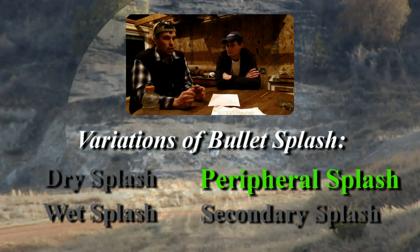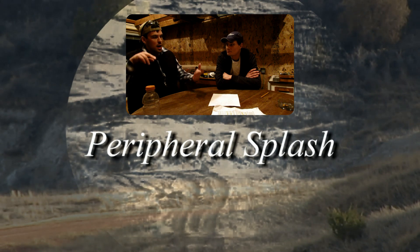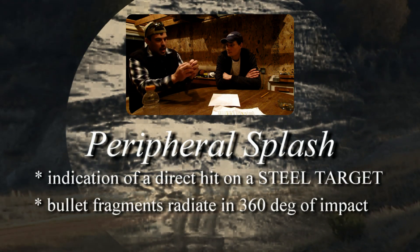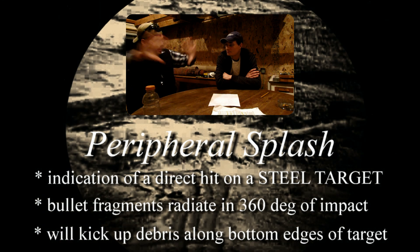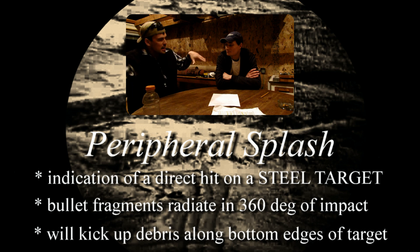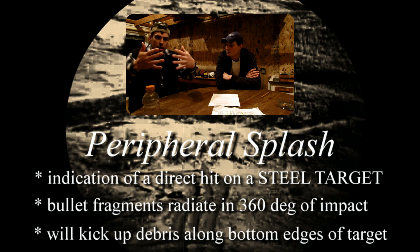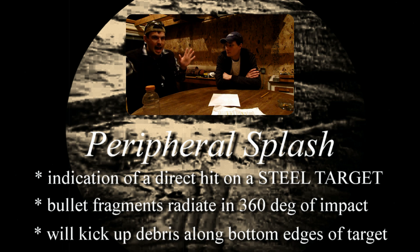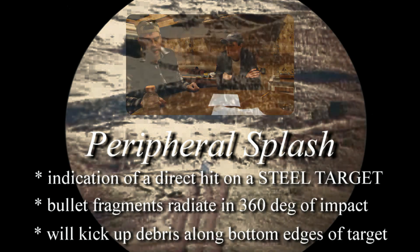If you hit a steel target, you're going to have what they call peripheral splash. That's where the bullet disintegrates on a flat piece of steel and all that lead and copper jacket goes 360 degrees, creating a cutting effect on the ground immediately perpendicular to where the target is situated. You're going to see like a halo of dust around the target — splash on this side, splash on the other side — a real nice peripheral splash, which indicates a hit on a steel target.